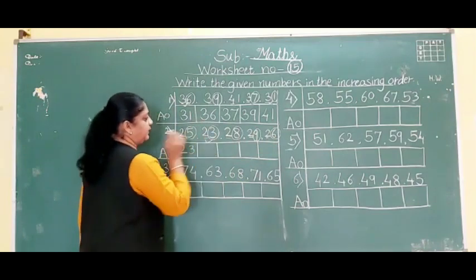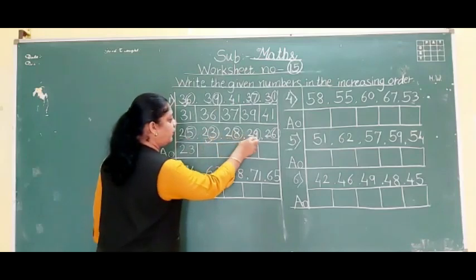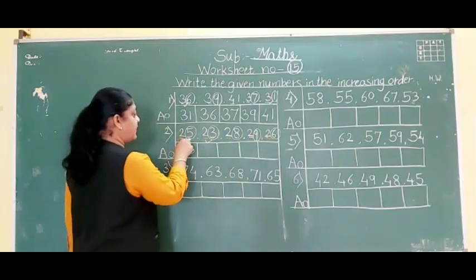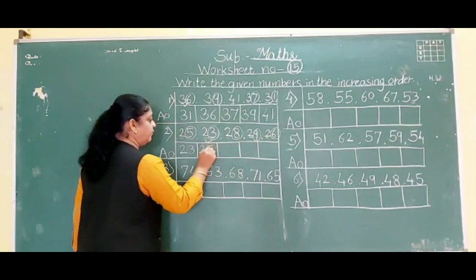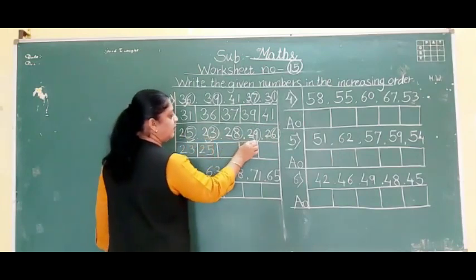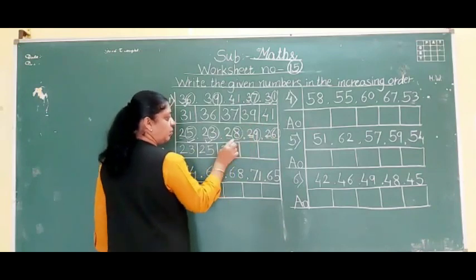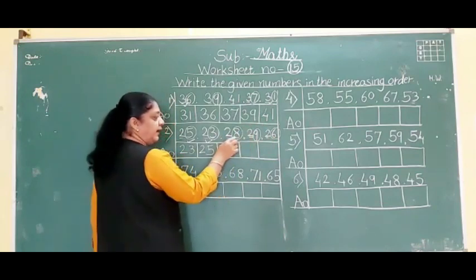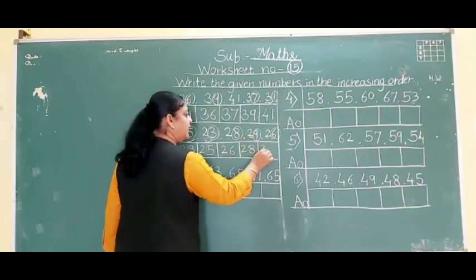23 is completed. Then 4 — not there; 5 — yes, so 25. 6 is there, so 26. 7 — no; 8 — yes, so 28. And then 29.